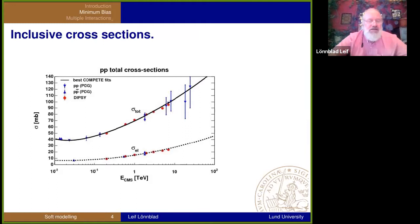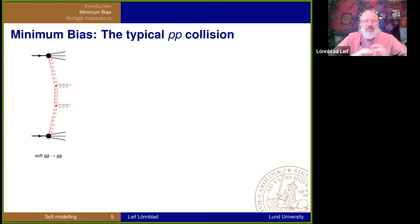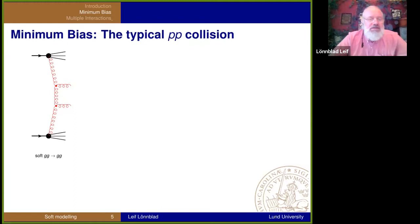The cross-section looks like this — it increases logarithmically with increasing energy. We see that the total cross-section is much larger than the elastic cross-section, of course, and there are some other cross-sections as well. We're going to look at the typical PP collision. Probably the most common partonic process is the simple gluon-gluon-to-gluon-gluon scattering.